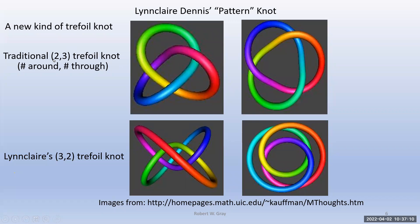The traditional trefoil knot has notation 2,3 — it's a torus knot, meaning it fits on a torus. You go two times around the torus and three times through the center. But Linclair said that's not what she was drawing. Professor Kauffman figured out it's a 3,2 knot — you go three times around the torus and twice through the center. That was a form of the trefoil knot Professor Kauffman hadn't encountered before.